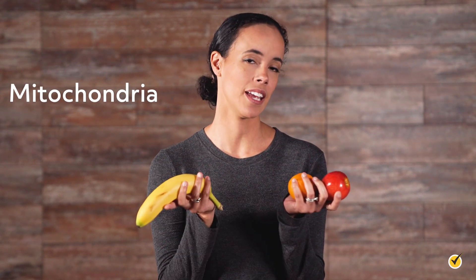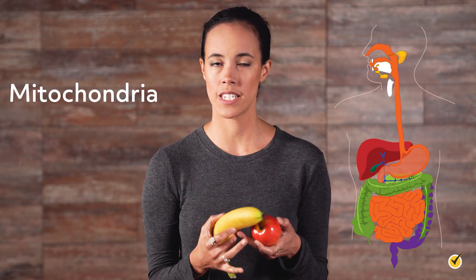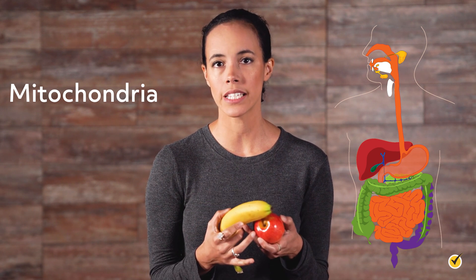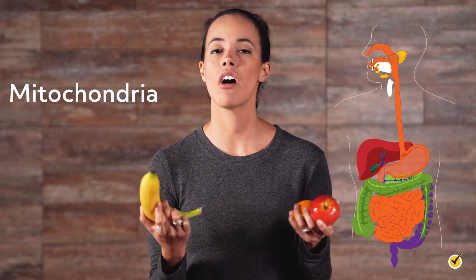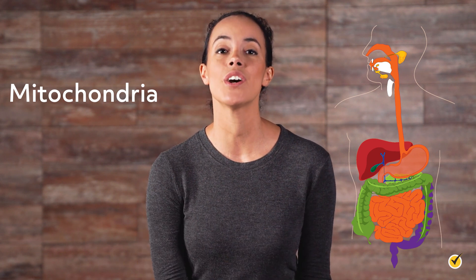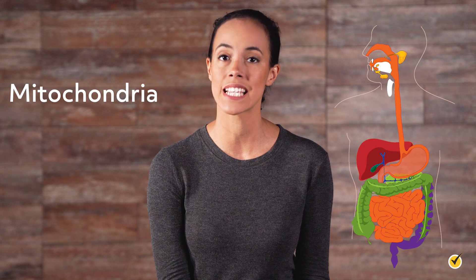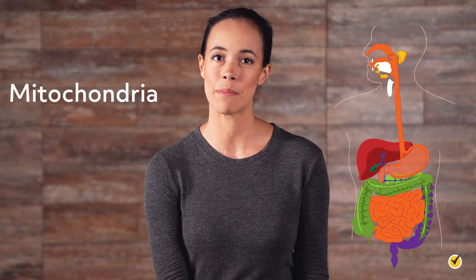Hi and welcome to this video on mitochondria. Have you ever wondered how the body makes energy from the food that we eat? The digestive system at a macroscopic level breaks down food physically and chemically, but how do cells use that food for energy? It all happens in the mitochondrion. In this video we'll talk about some of its properties, its functions, and some larger roles it plays in the body.